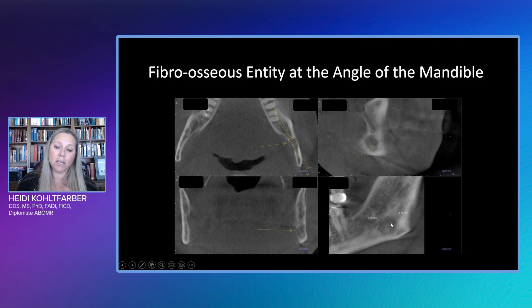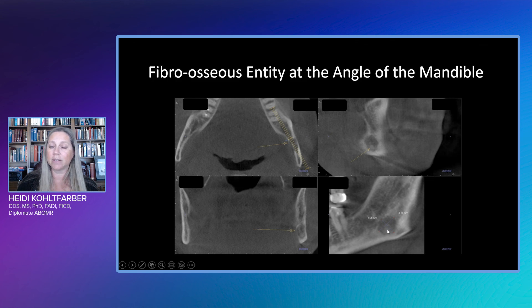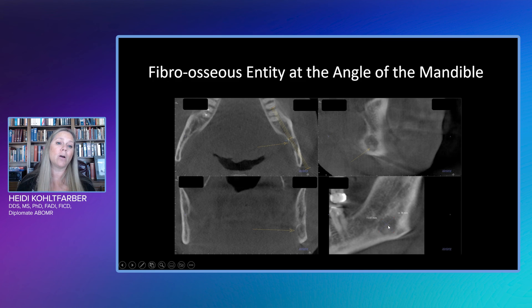We can actually get these at the angle of the mandible below the mandibular canal. In fact, anything below the mandibular canal is not going to be odontogenic in origin. You'll notice we have a ground glass appearance with that central hyperdense nidus and slight thinning and expansion of the otherwise intact cortical borders — this tends to be an area where we also see fibroosseous entities. I hope you enjoyed the discussion for today.